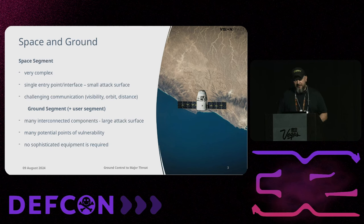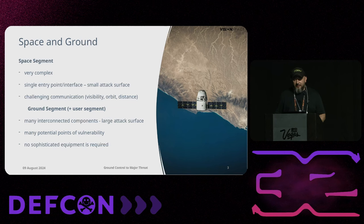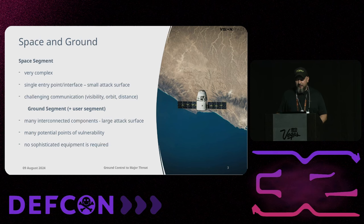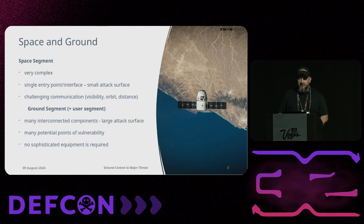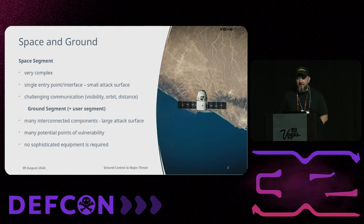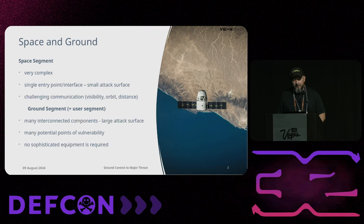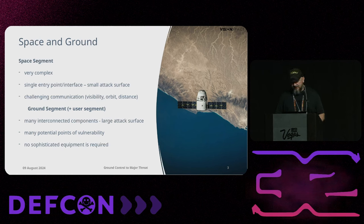The ground segment has less complex elements but there are many available, imposing a much larger attack surface. Communicating directly to a spacecraft is challenging not because of technical aspects but because of environmental factors like visibility, orbit, and distance from earth. Additionally, the ground segment uses standard infrastructure, making it vulnerable to the same vulnerabilities present in any other infrastructure or software we use daily.